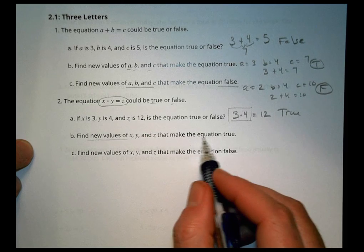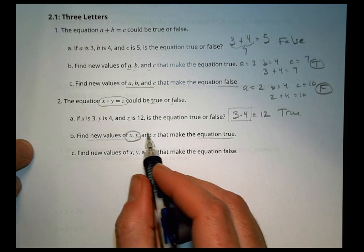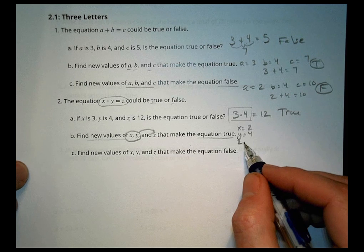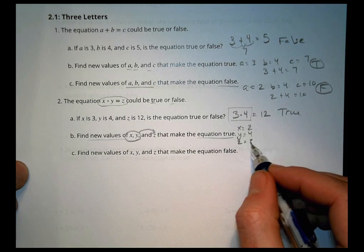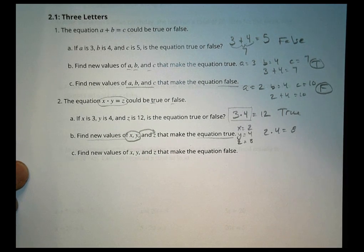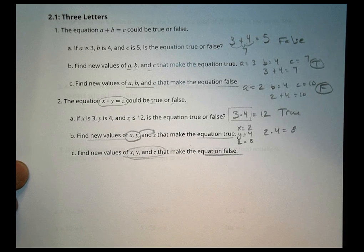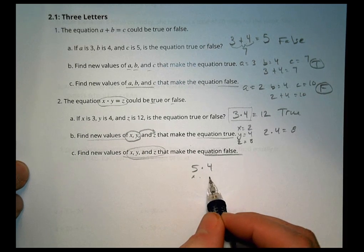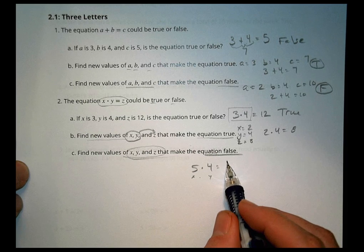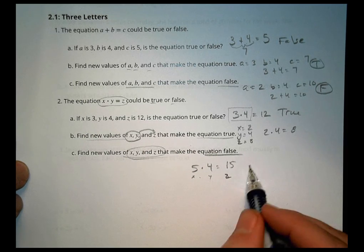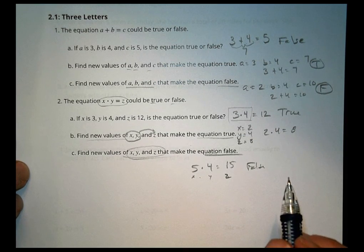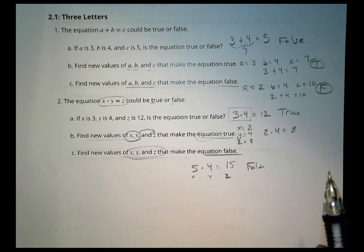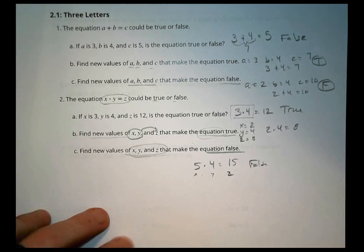It says find new values of x, y, and z to make it true. So think about two things you can multiply together and what that solution is going to be. Perhaps x is equal to 2, y equals 4, and then z would equal 8 to be true. 2 times 4 is 8, and that would work out okay because 2 times 4 equals 8. Can you think of 3 that would make it false? Sure. Think of two numbers you multiply together. Maybe 5 times 4, and that's your x and y. And instead of saying the correct answer would be 20, you could say 15 for z. And that would be a false statement.